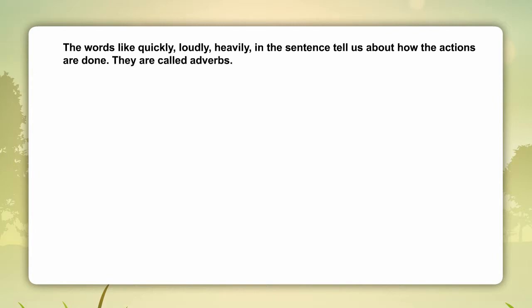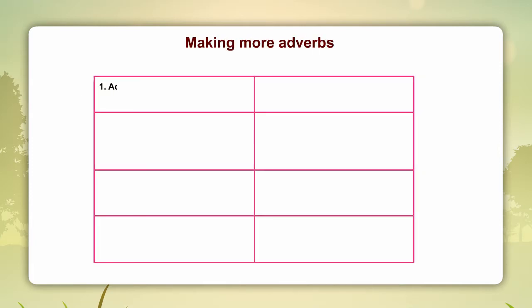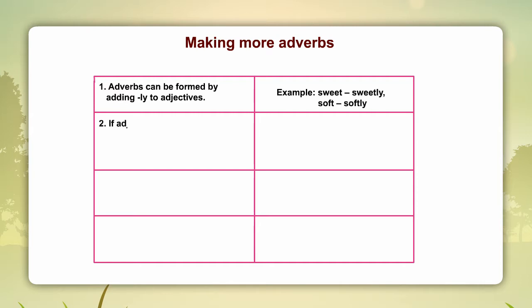They are called adverbs. Examples: Slowly, Kindly, Softly, Sweetly. Adverbs can be formed by adding -ly to adjectives. For example: Sweet becomes Sweetly, Soft becomes Softly.